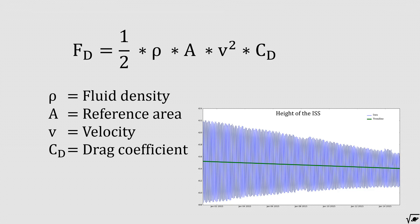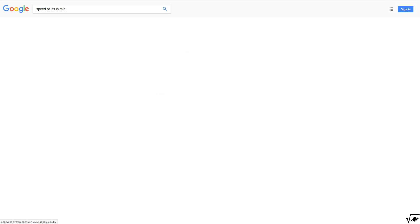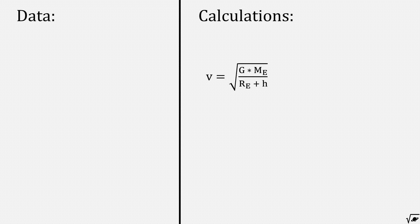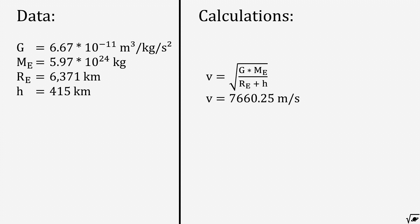So let us start by calculating the velocity of the ISS. A quick lookup shows that the velocity is about 7660 meters per second, but we can also calculate that with the equation for orbital velocity. Given the gravitational constant, the mass and radius of the Earth, and the orbital height, we can obtain the same number.